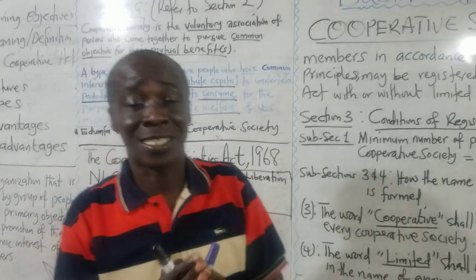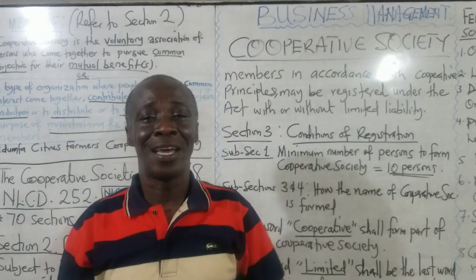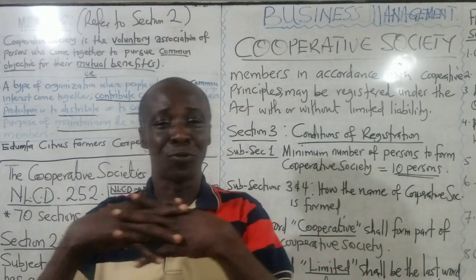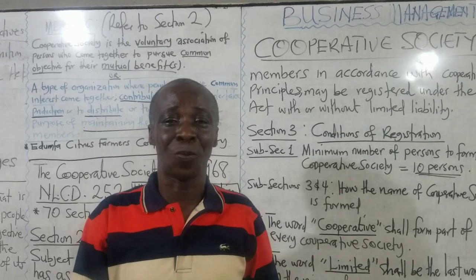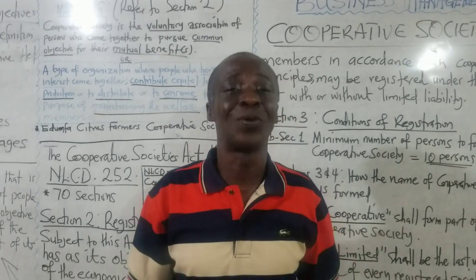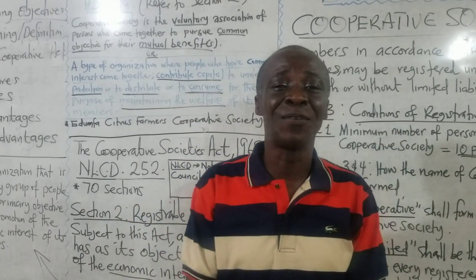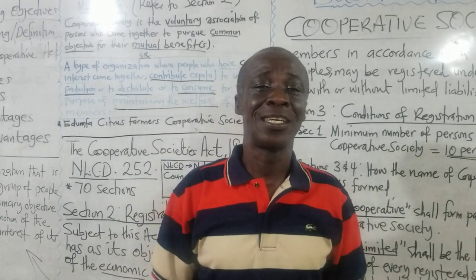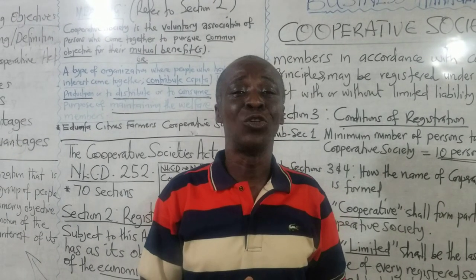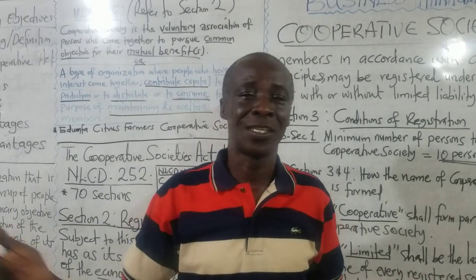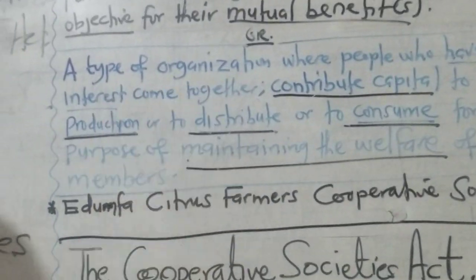So that is another way we can define cooperative society. A group of people come together — it is still a voluntary organization. They contribute capital. Some of them produce, so we call them producers' cooperative society. Some of them establish shops and members go there to buy goods at relatively lower prices than they would have purchased elsewhere. That would be the consumers' cooperative society.